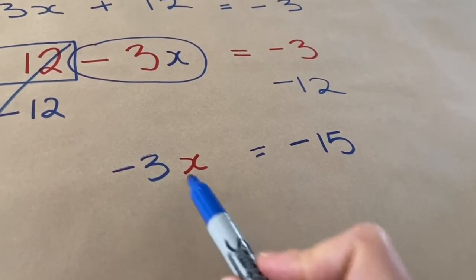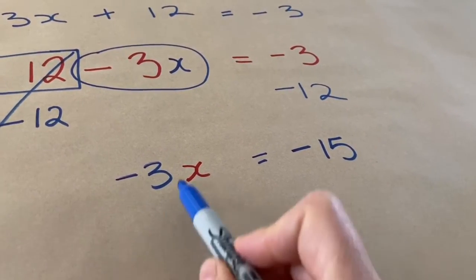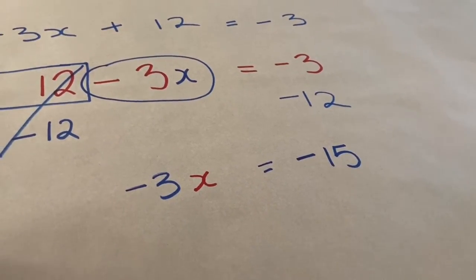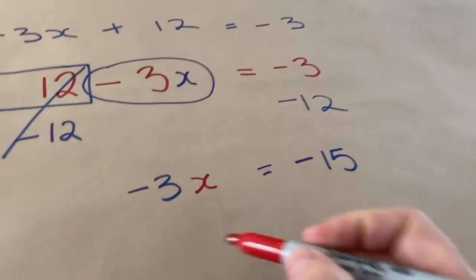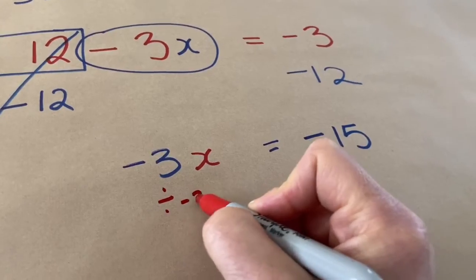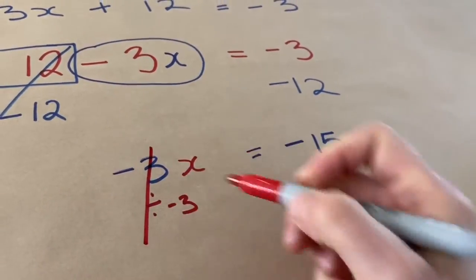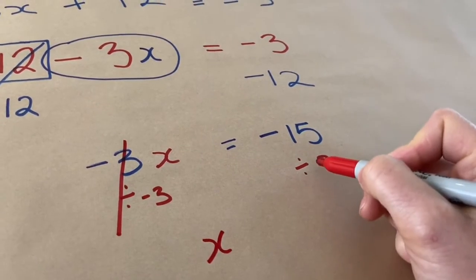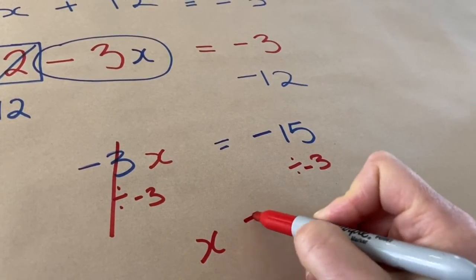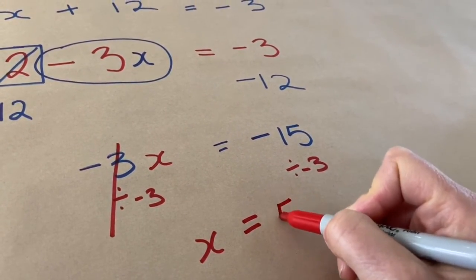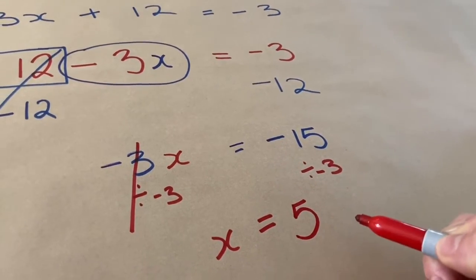So now, I have this x, and I multiplied it by negative 3 to get negative 15. I want to undo that, so that means I want to divide by negative 3, divide by negative 3, and these cancel out. I just have x equals, negative 3, x is equal to 5.